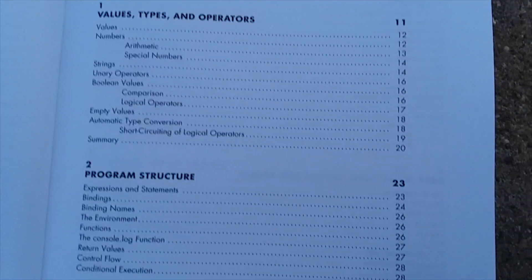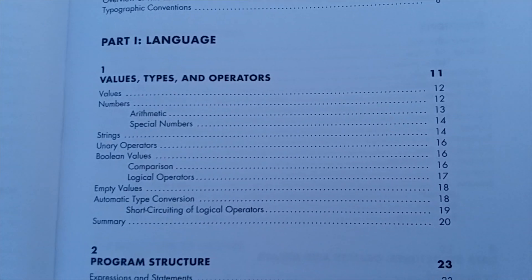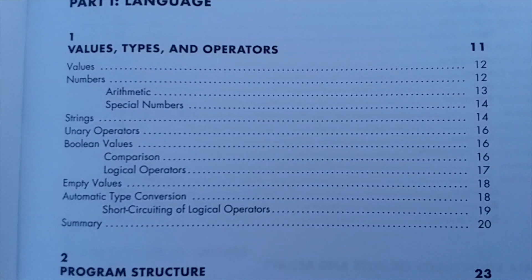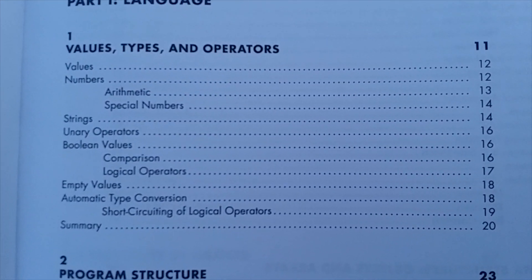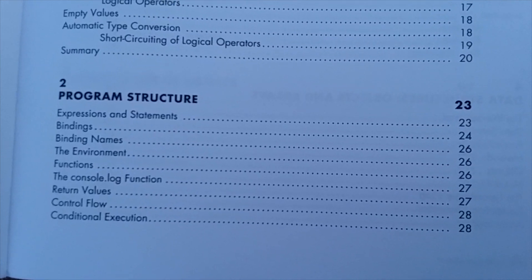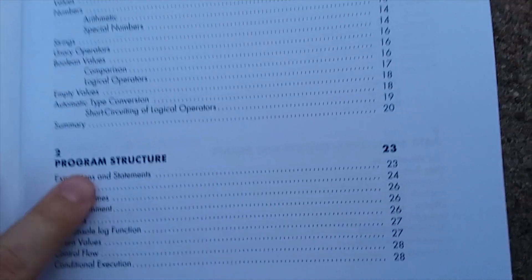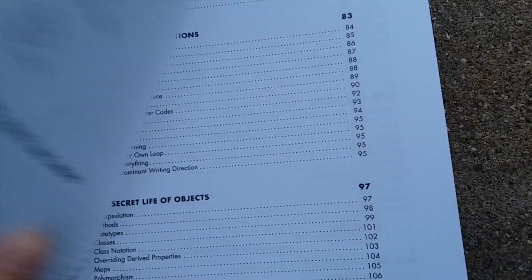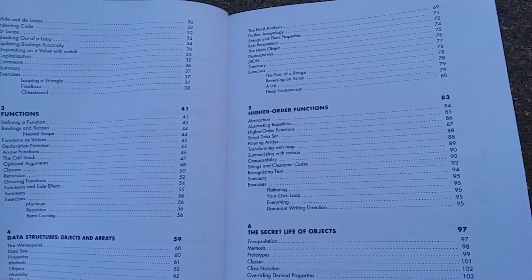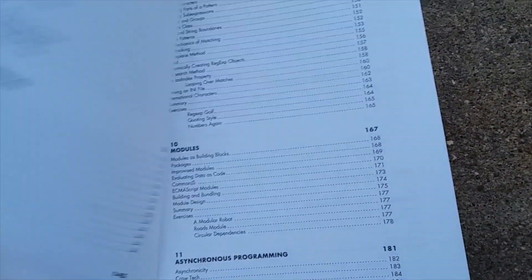Part one: language. Part two: program structure. Values, types, and operators. We have values, numbers, arithmetic, strings, then down to program structure, finding names, the environment, functions, console log function. Tons of stuff here. We got functions, data structures, higher order functions, the secret life of objects.